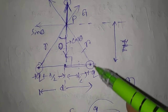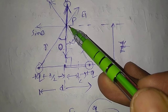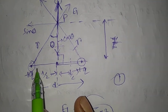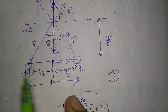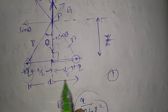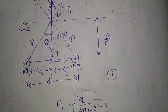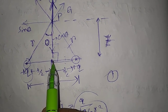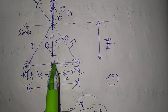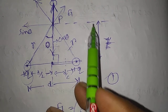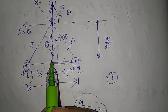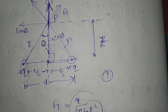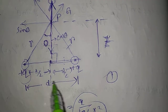Hello friends, today we are going to calculate the electric field at a point P which is at a distance Z. There are two charges, plus Q and plus Q, separated by a distance D. From the midpoint of distance D to the point P, there is a distance Z. So what will be the electric field at point P?